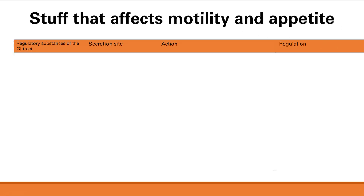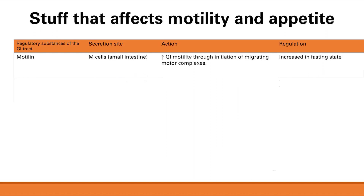Now let's look at substances that affect motility and appetite. The first is motilin from M-cells — easy to remember from the name. It increases GI motility through the initiation of migrating motor complexes. Interestingly, this is triggered in the fasting state. Your stomach growling when you're hungry is actually caused by these migrating motor complexes moving gut contents and air. Motilin clears out the GI tract to make room for new food.